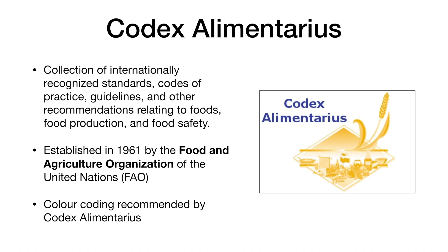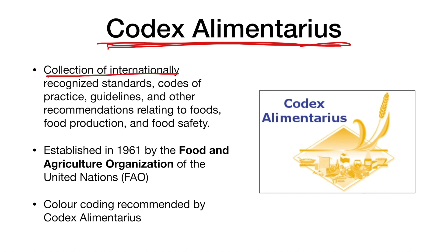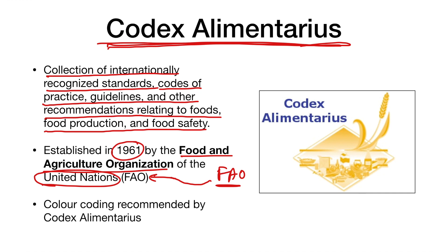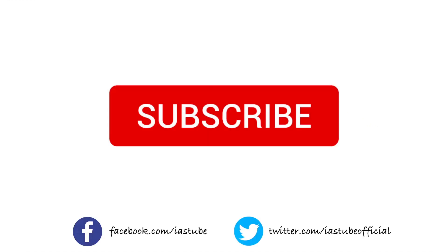FSSAI drew inspiration from an international organization called Codex Alimentarius, which has a collection of internationally recognized standards, codes of practice, guidelines, and recommendations relating to food, food production, and food safety. It was established in 1961 by the Food and Agriculture Organization (FAO), which runs under the United Nations. Codex Alimentarius and other international organizations have been encouraging countries to color code their food products, and many countries are already implementing this.